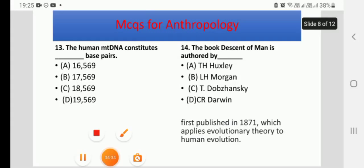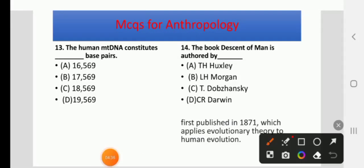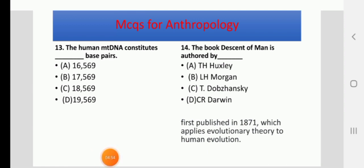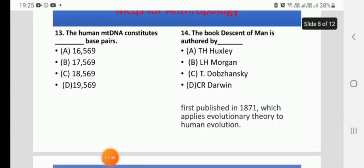Question 13: Human mtDNA constitutes how many base pairs? Options: 16,569 / 17,569 / 18,569 / 19,569. The right answer is A, 16,569 base pairs.